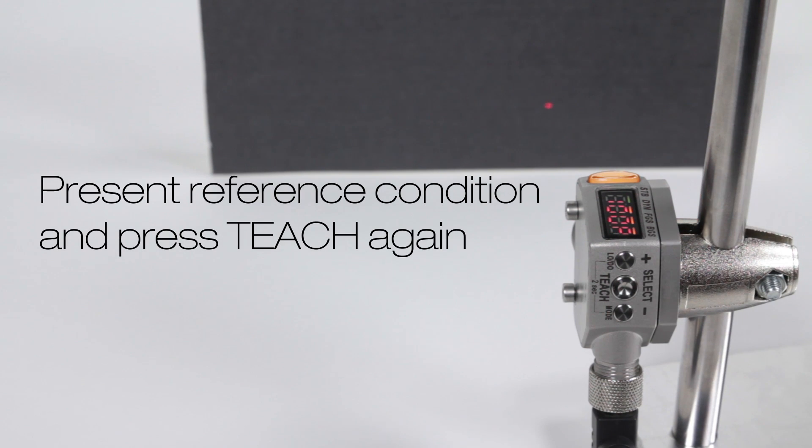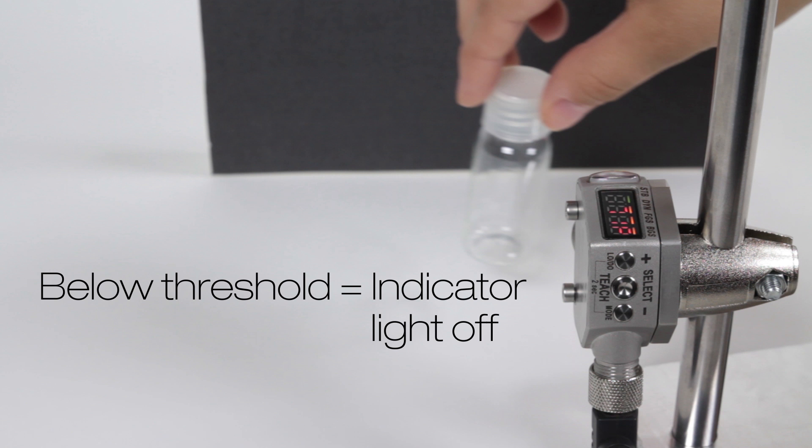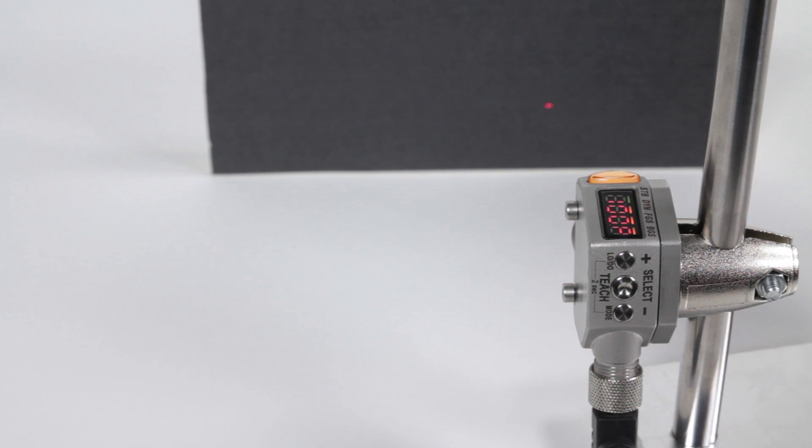Present a reference condition and click the button again to teach the reference condition. The sensor learns this as a 100% match condition and will look for changes in distance, intensity or a second reflection condition. The Q4X can reliably detect clear or transparent objects including files, films and bottles.